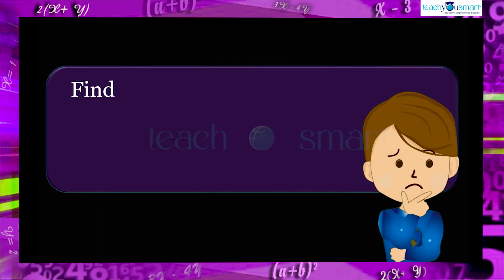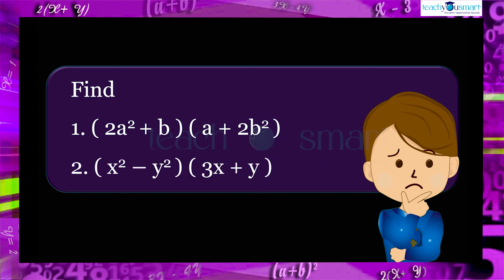Find number one: (2a² + b) multiplied by (a + 2b²). Number two: (x² - y²) multiplied by (3x + y).